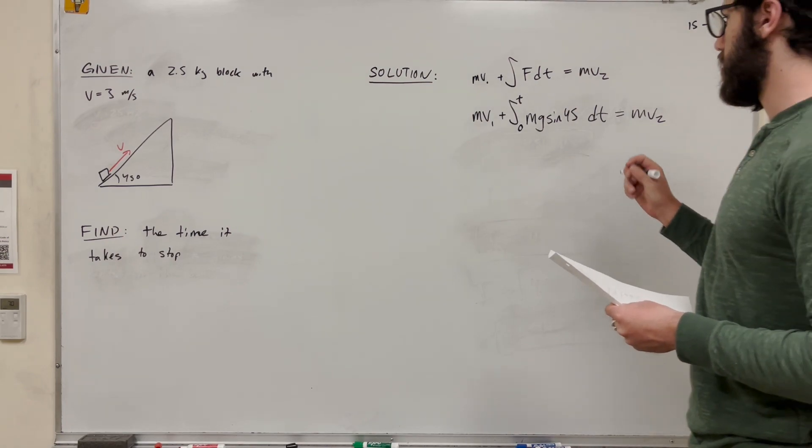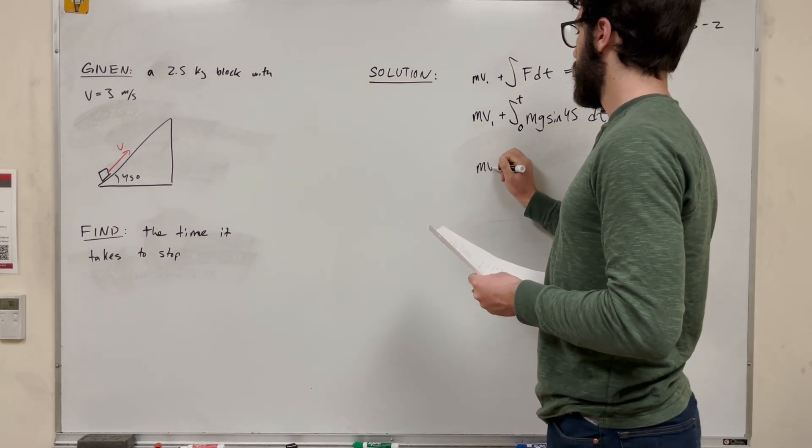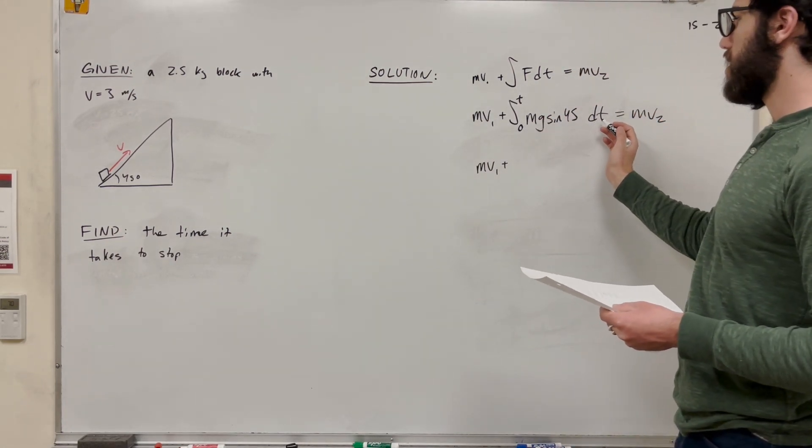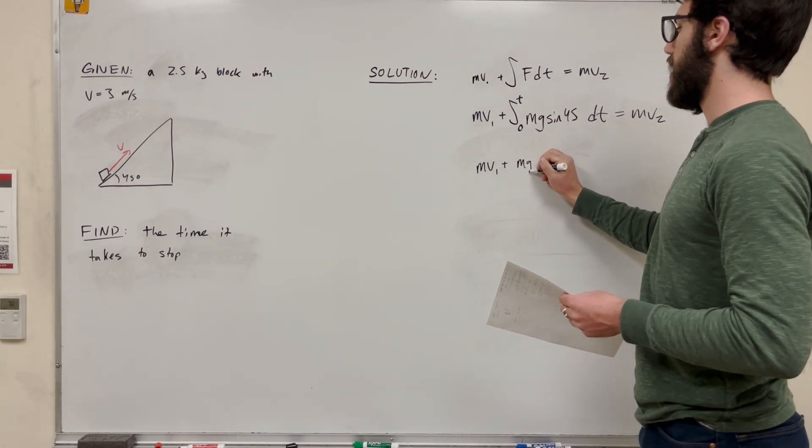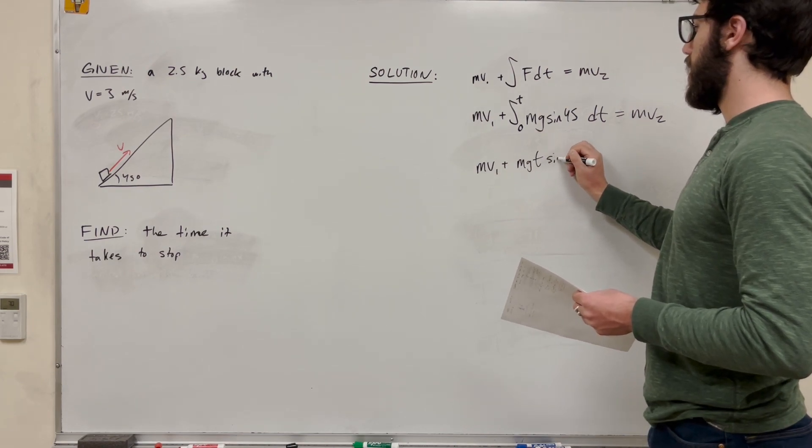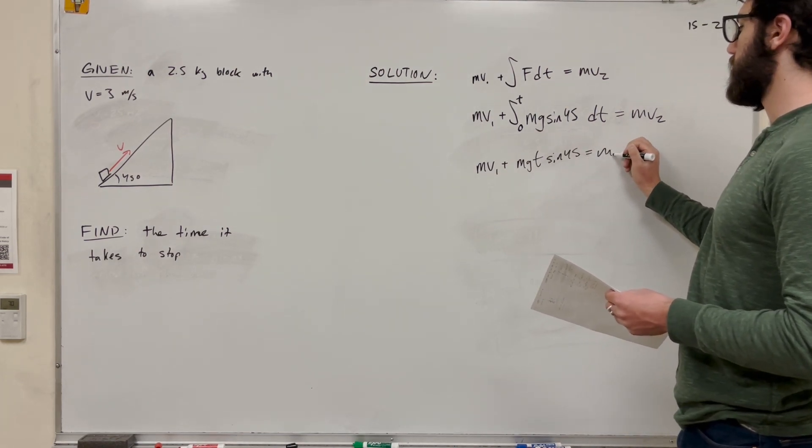Okay, so we're here, so we can solve this integral really easy now. There's no T in this, and we're doing the integral with respect to T. So just the T is going to come down. It's going to become mass times gravity times sine of 45 times T is equal to mass times velocity 2.